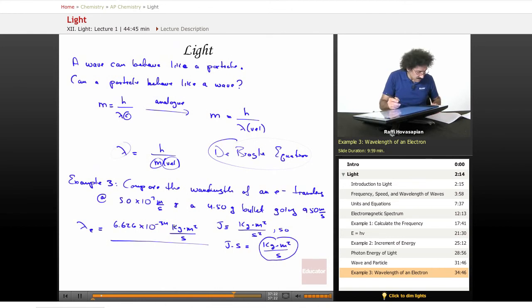So the mass of an electron, when we look it up in a table, it is equal to 9.1 times 10 to the negative 31 kilograms. It's actually in the back of your book. And the speed is 5.0 times 10 to the seventh meters per second. So here we go. Kilogram cancels kilogram. Meter cancels one meter. Second cancels second. Sure enough, we're left with a unit of meter, so everything works out just fine.